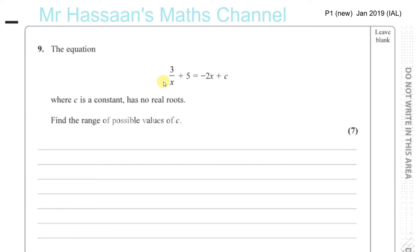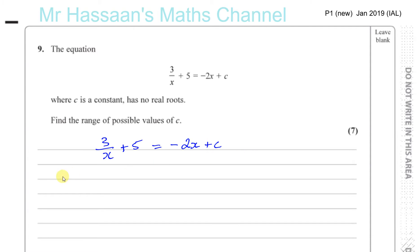When you want to solve an equation like this algebraically, what we must do is first get rid of any denominator and rewrite it as one equation that equals 0 that we can solve. So I'm going to take the equation 3 over x plus 5 equals minus 2x plus c, and multiply both sides by x. That gives 3 plus 5x equals minus 2x squared plus cx.